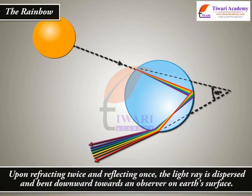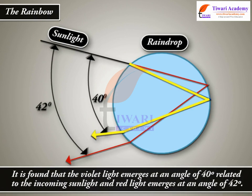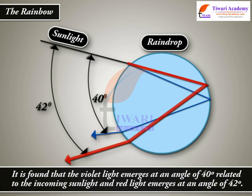Upon refracting twice and reflecting once, the light ray is dispersed and bent downward towards an observer on Earth's surface. The violet light emerges at an angle of 40 degrees relative to the incoming sunlight, and red light emerges at an angle of 42 degrees.